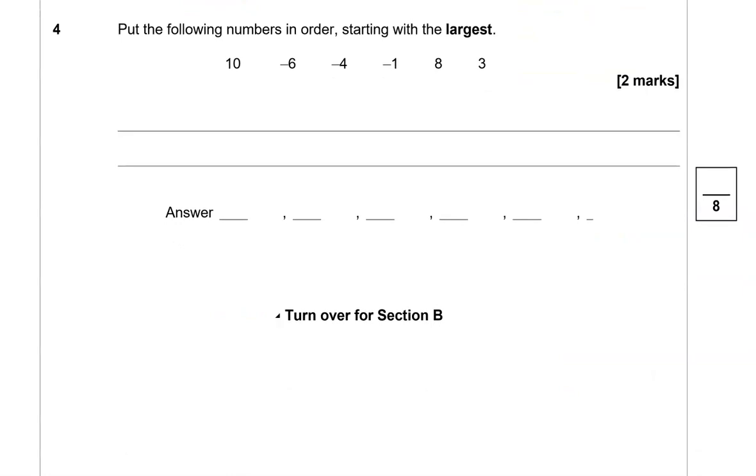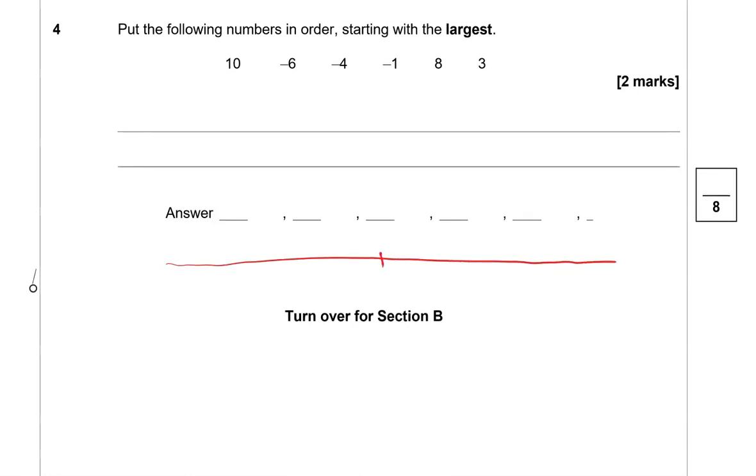Put the following numbers in order, starting with the largest. We've got 10, -6, -4, -1, 8 and 3. So we could link this with money or temperatures. I'm going to draw a number line. If you imagine 0 being here, then we'd have 1, 2, 3, 4, 5, 6, 7, 8 and it continues 9, 10. On the other side we'd have -1, -2, -3, -4, -5, -6 and it continues.